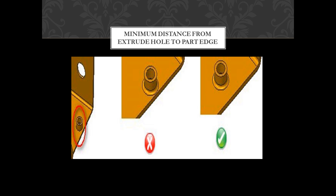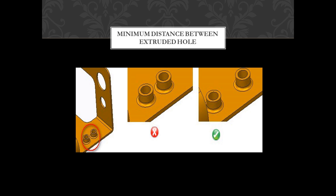Minimum distance between extruded holes: A certain distance should be maintained between two extruded holes in sheet metal designs. If extruded holes are too close, it can lead to metal deformations. It is recommended that the minimum distance between two extruded holes should be six times the thickness of the sheet metal.